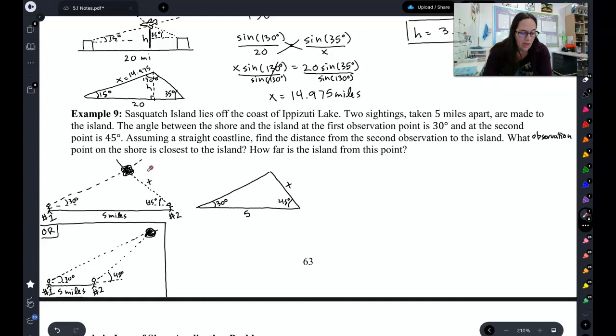So for this problem, as a class, we're going to assume the island was between the two observation points. So here's my triangle that I end up with. This is observation point number one. This is observation point number two. And the first question I'm asked is, find the distance from the second observation point to the island. So that's this right there. That's the distance I'm trying to find first. Here's my island. So right now we don't have a complete pair, but we can find one pretty quickly. 180 degrees minus 30 degrees minus 45 degrees is 105.